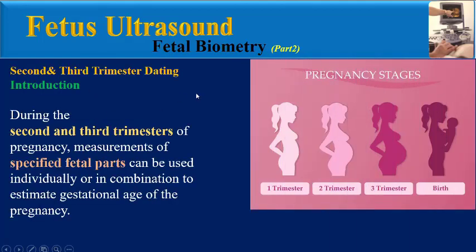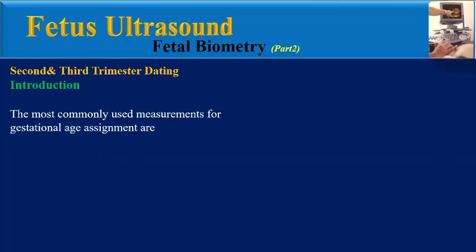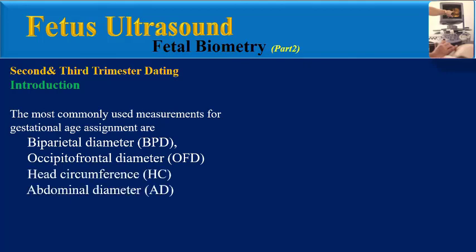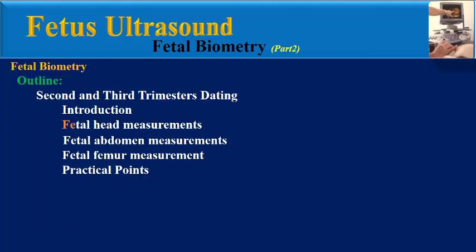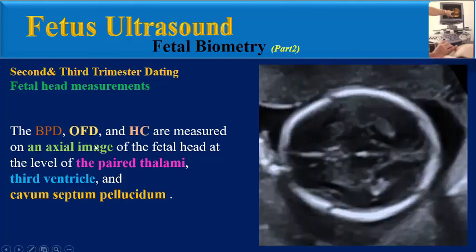During the second and third trimesters of pregnancy, measurements of specified fetal parts can be used individually or in combination to estimate gestational age. The most commonly used measurements for gestational age assignment are biparietal diameter (BPD), occipital frontal diameter (OFD), head circumference (HC), abdominal circumference (AC), and femur length (FL).